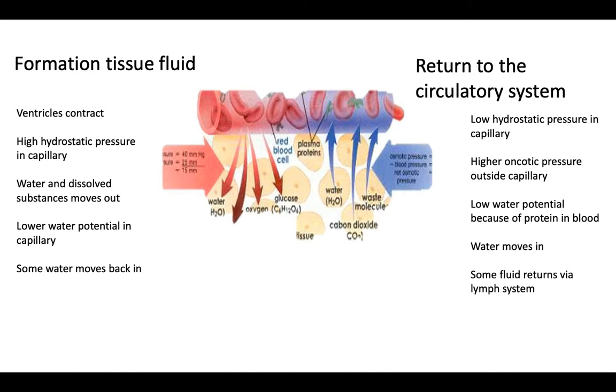So how do you write about it in the exam? Formation of tissue fluids: ventricles contract, you get a higher hydrostatic pressure than oncotic. Water and dissolved substances are forced out. We still have a lower water potential in the capillary because of proteins, so some water moves in by osmosis.